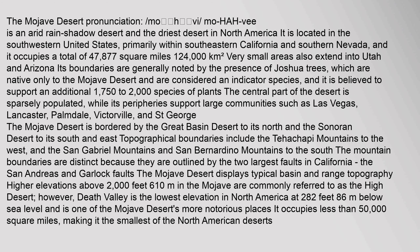Topographical boundaries include the Tehachapi Mountains to the west, and the San Gabriel Mountains and San Bernardino Mountains to the south. The mountain boundaries are distinct because they are outlined by the two largest faults in California, the San Andreas and Garlic Faults. The Mojave Desert displays typical basin and range topography. Higher elevations above 2,000 feet (610 meters) are commonly referred to as the high desert. Death Valley is the lowest elevation in North America at 282 feet (86 meters) below sea level and is one of the Mojave Desert's more notorious places. It occupies less than 50,000 square miles, making it the smallest of the North American deserts.